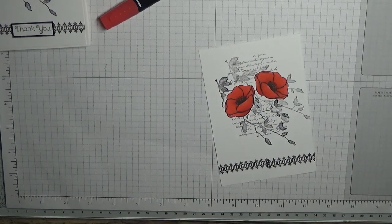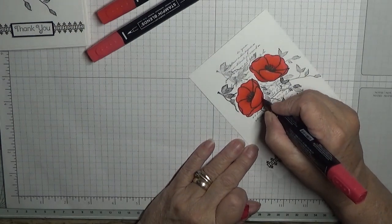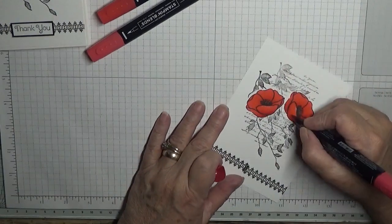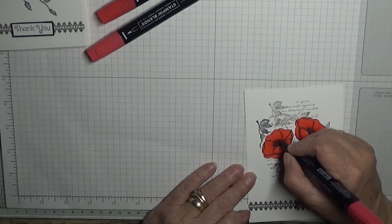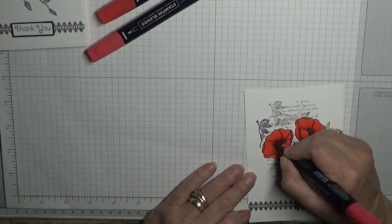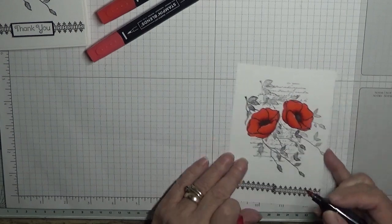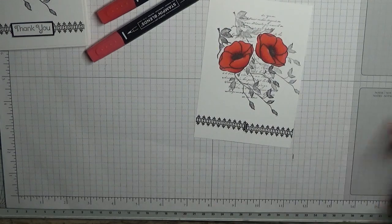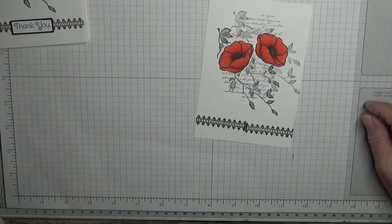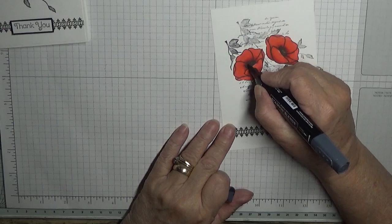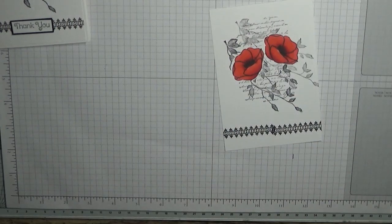And then with Cherry Cobbler Light I just went just underneath, just at the edge. And then right just above the black. And then just put these two away. With the black I just darkened up the seed bit, stamen bit. And that is it.